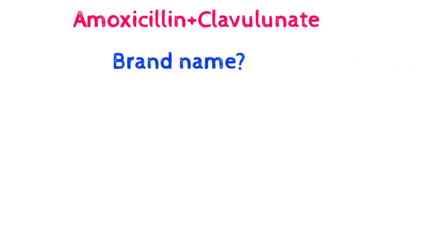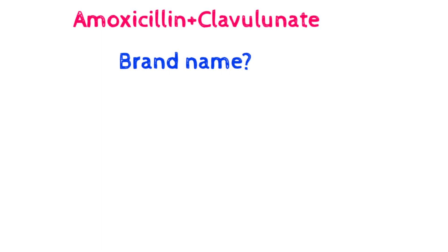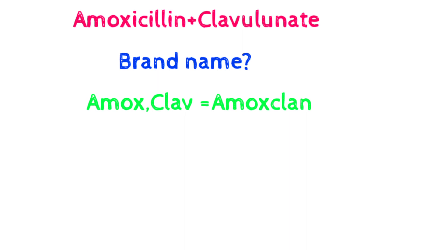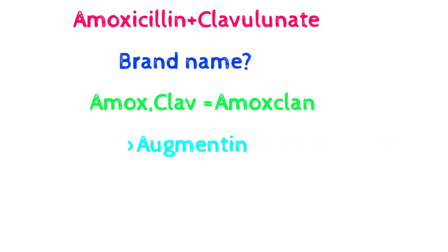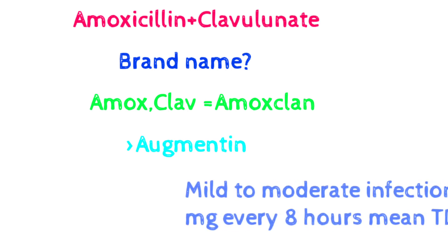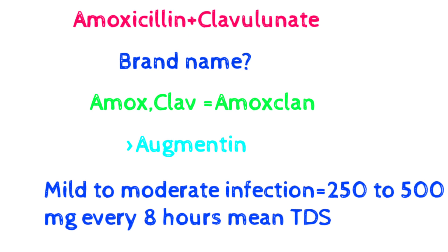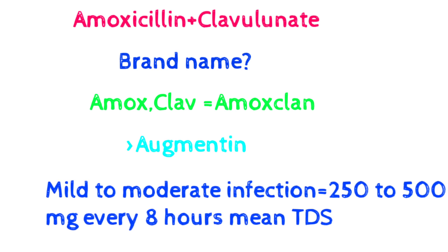Now for combinations: if we combine amoxicillin with clavulanate, the brand names are Amoxyclav and Augmentin. The name Amoxyclav is derived from 'amox' from amoxicillin and 'clav' from clavulanate.